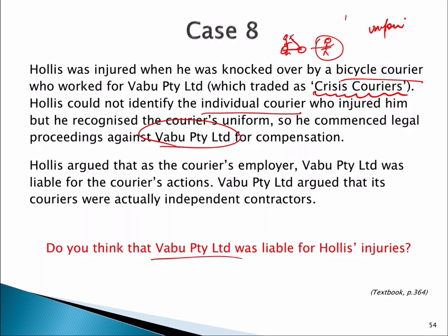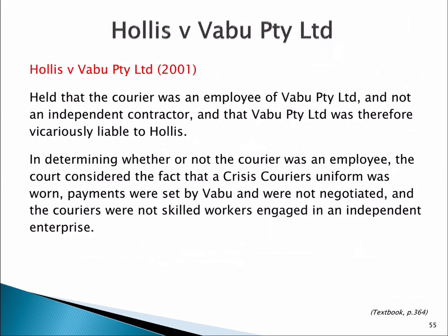Vaboo argued that the couriers were actually contractors and not employees, and therefore they shouldn't be liable for the harm caused. They argued the person who was knocked over should sue the individual courier, not them as a company. However, the court held that the courier was an employee for the purposes of vicarious liability and not an independent contractor, so the employer-employee relationship gave rise to vicarious liability.